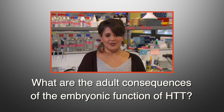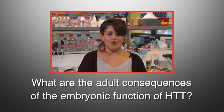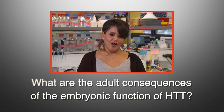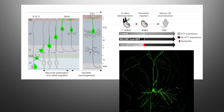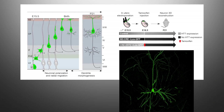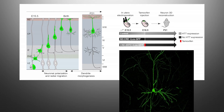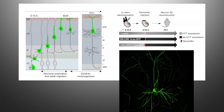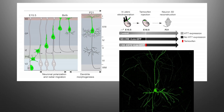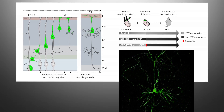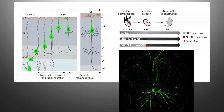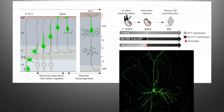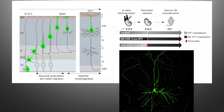What are the adult consequences of the embryonic function of Huntington? We took advantage of an inducible system to compare adult dendritic morphology in two conditions: an embryonic and postnatal loss of Huntington, and a loss restricted to postnatal stages.